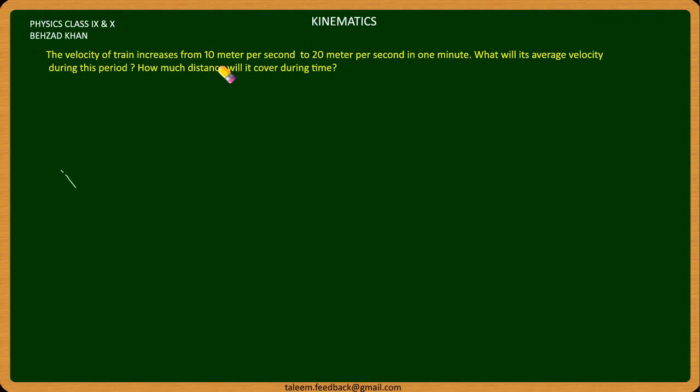The first thing is that the train is from point A to point B. The initial velocity is 10 meters per second. The final velocity is 20 meters per second.